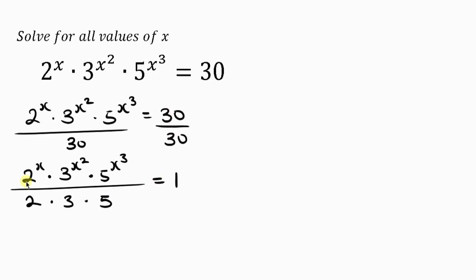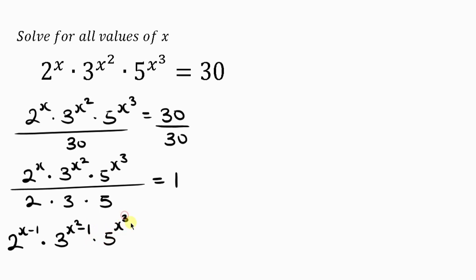Now we apply indices on the left-hand side. Since they are dividing and share the same base, we subtract the powers. This gives us 2^(x−1) times 3^(x²−1) times 5^(x³−1) equals 1.